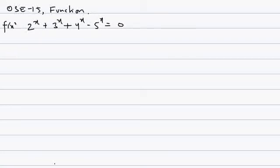This is question OSC 15, functions topic. We have to find the number of solutions of the equation 2^x + 3^x + 4^x - 5^x = 0. If we assume this as f(x), we need to find the number of values of x where f(x) = 0, or the points of intersection of f(x) with the x-axis.